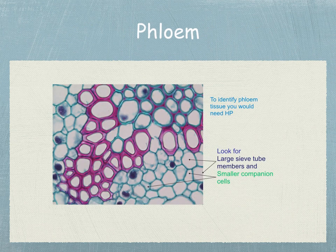If you were looking under a microscope, you would notice the xylem, which stains red in the middle. Then you can identify the phloem — look for large sieve tube members and then the smaller companion cells next door to them.